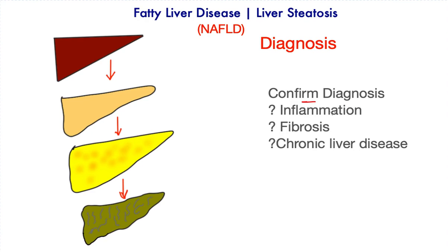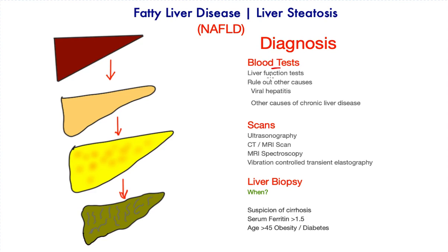The diagnosis must confirm the condition and settle whether or not there is inflammation or fibrosis — that is scarring — within the liver, or whether it has progressed to chronic liver disease. Blood tests are an important part of this process. There is a panel of tests called liver function tests, in particular the aminotransferases AST and ALT. When there is damage to the liver, as in steatohepatitis, these enzymes escape into the bloodstream, and this derangement should raise suspicion. Other causes of deranged liver function tests such as viral hepatitis also have to be investigated.